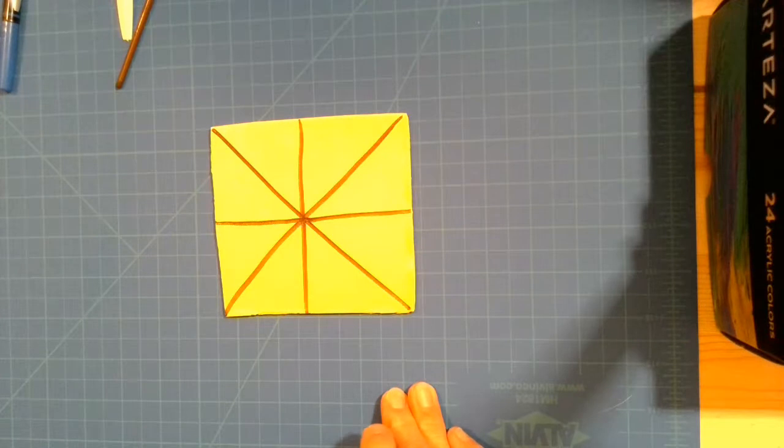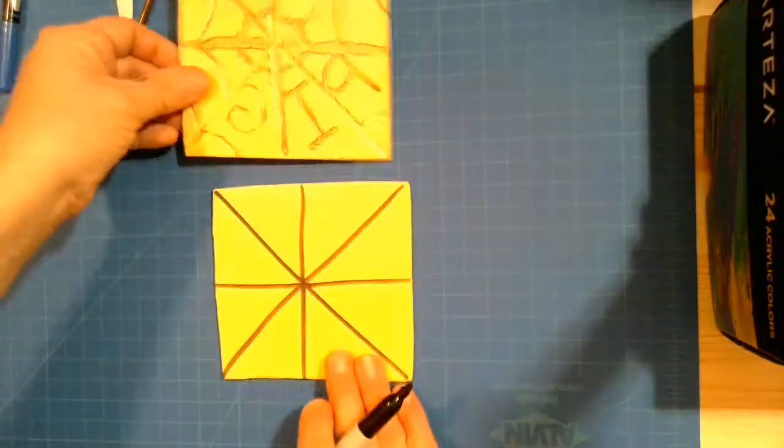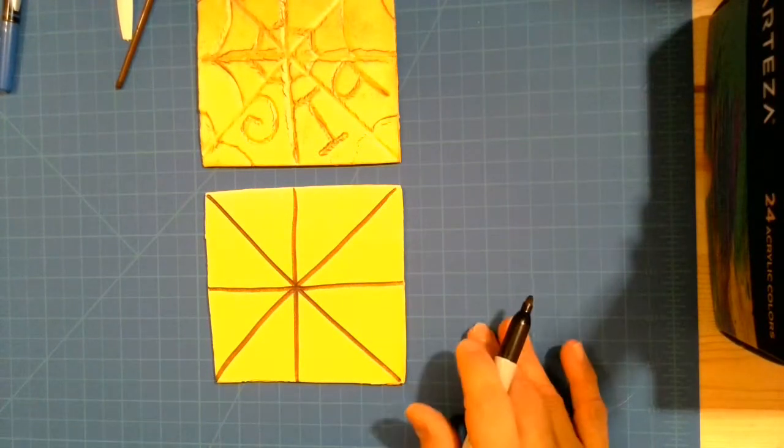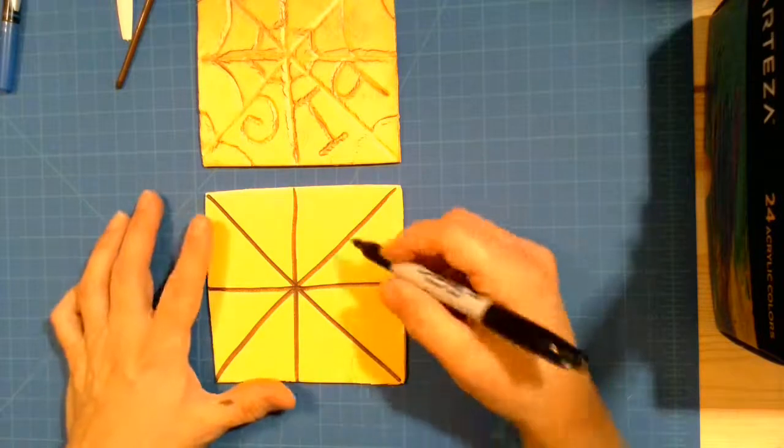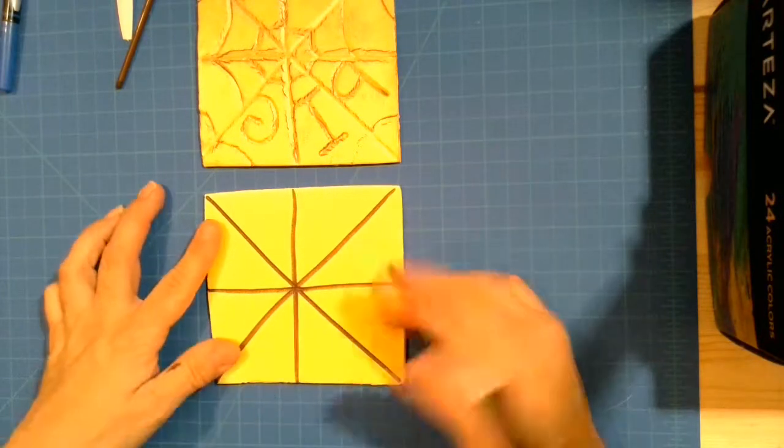Now our spiderweb is going to have a word in it because Charlotte liked to spin words in her webs. The word that we're going to make today is pig. So when we make the word pig on our web we actually need to do it backwards so that when we print it, it shows up the right direction.